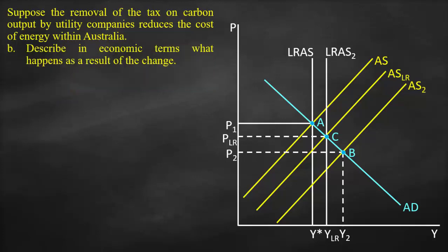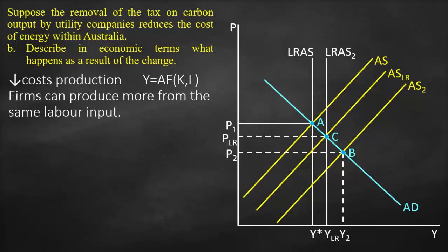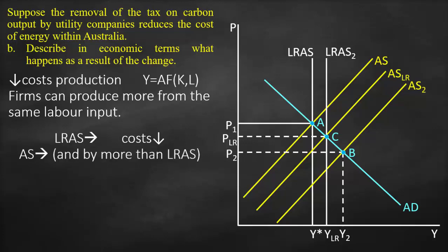The next part of the question asks us to describe in economic terms what happens as a result of the change. We have a lower cost of production which affects our production function, meaning any company can produce more from the same labor input. Therefore the long-run aggregate supply curve shifts to the right, resulting in lower costs, and the short-run aggregate supply shifts right as well but with a bigger shift compared to the long-run aggregate supply curve.